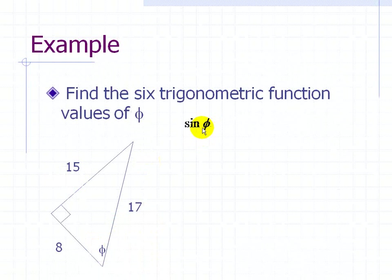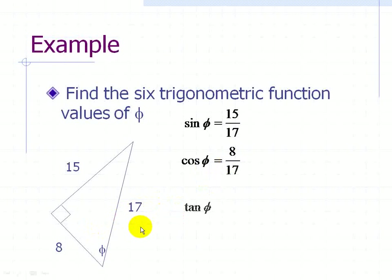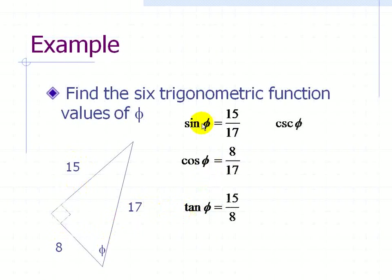The sine of phi equals the opposite side divided by the hypotenuse, which is 15 over 17. The cosine of phi is the adjacent side divided by the hypotenuse, or 8 over 17. The tangent of phi is the opposite side over the adjacent side, or 15 over 8. The cosecant of phi is the reciprocal of the sine, or 17 over 15 — that is, the hypotenuse divided by the opposite side.